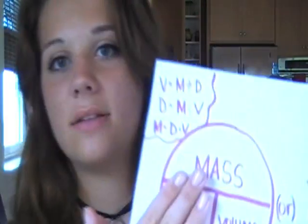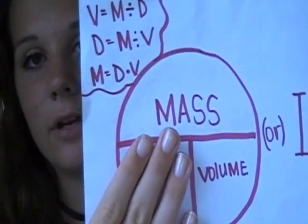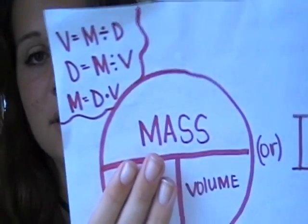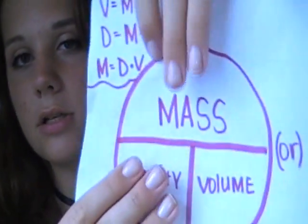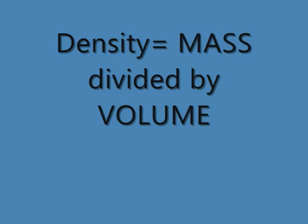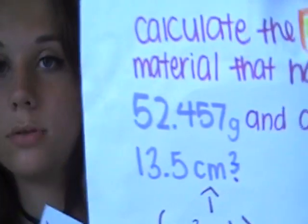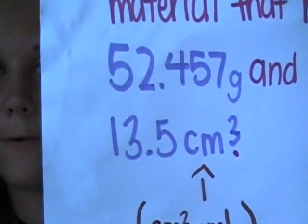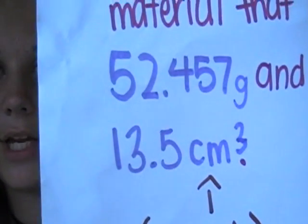You're just going to cover up density, and to figure that out you're going to divide mass by volume. Divide these numbers: 32.457 and 13.5. Easy — and then you get your answer, which should be 3.89.